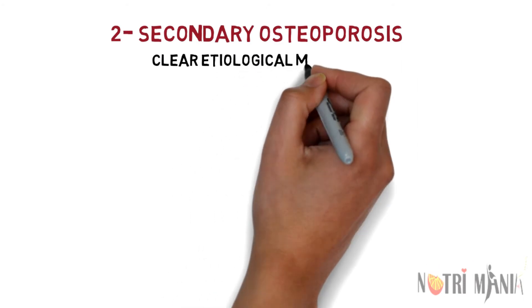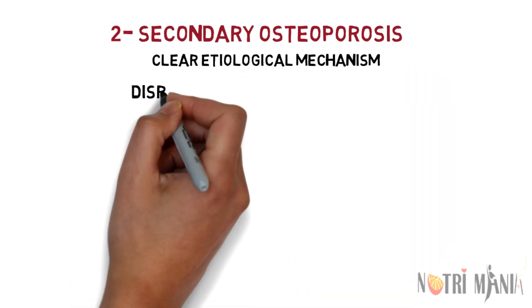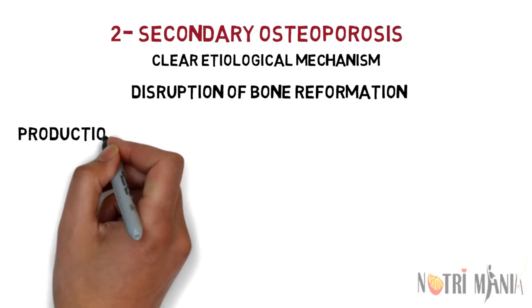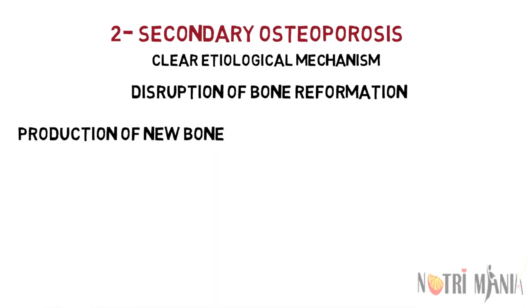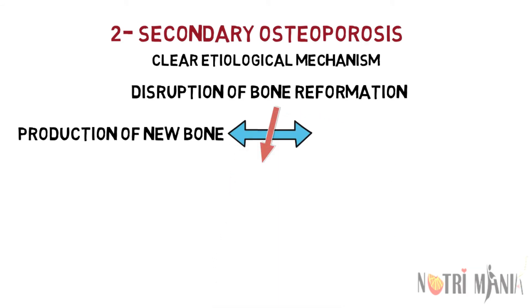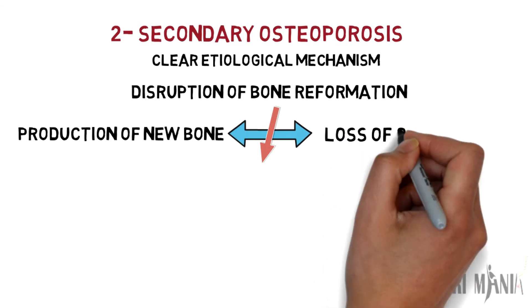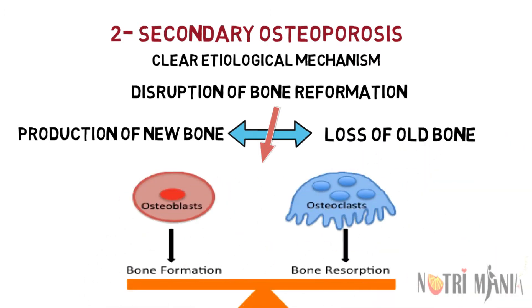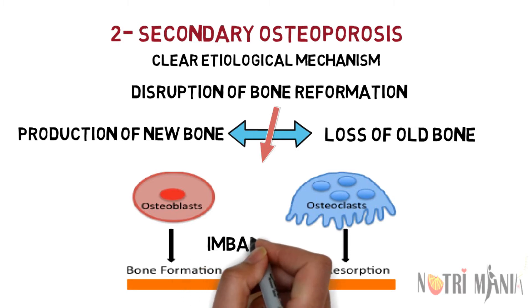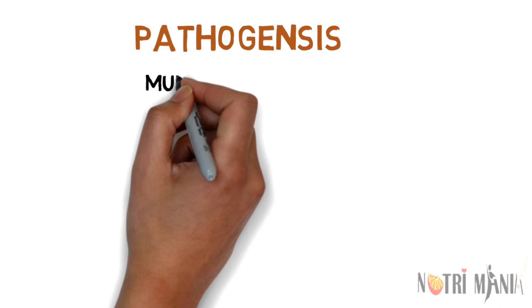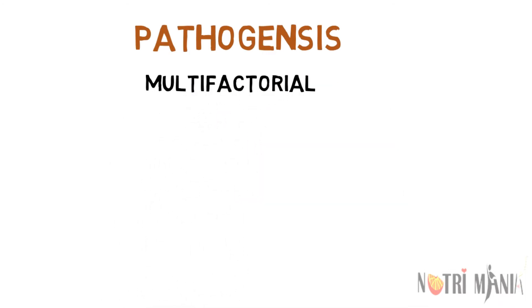Secondary osteoporosis is characterized as having a clearly definable etiological mechanism. It develops when certain medical conditions and medications increase bone remodeling, leading to disruption of bone reformation. The loss of bone mass occurs due to the imbalance between the production of new bone and the loss of old bone, leading to a low bone turnover rate.